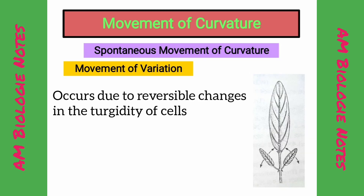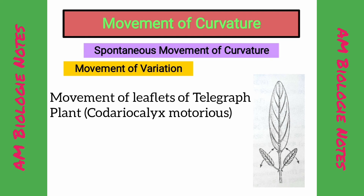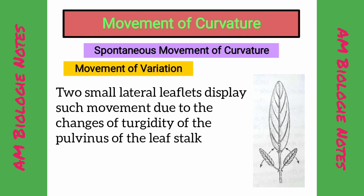Movements of Variation: This movement is caused by the reversible changes in the turgidity of cells. The best example of variation movement is the movement of leaflets of the telegraph plant. The two small lateral leaflets display such movements, affected by changes of turgidity of the pulvinus of the leaf stalk.